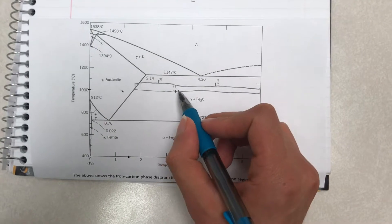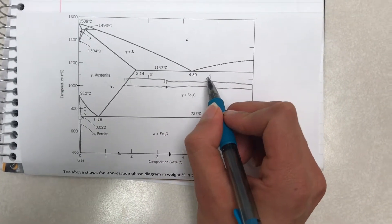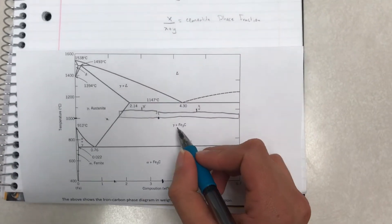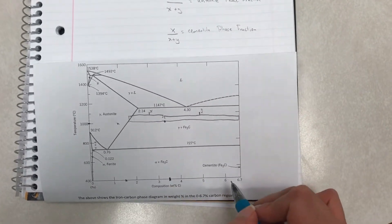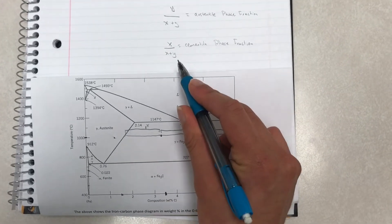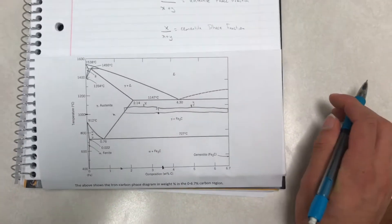So just remember to calculate the phase fraction of Austenite, you would have to get the part of the other side, y over x plus y, as seen here. And then to calculate the phase fraction of Cementite, you would have to get the other side, x over x plus y, which equals Cementite phase fraction.